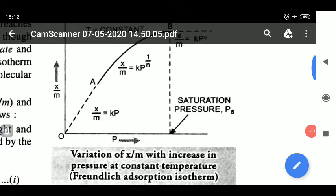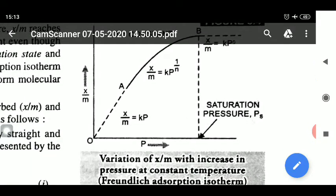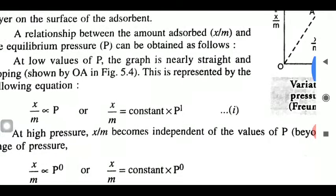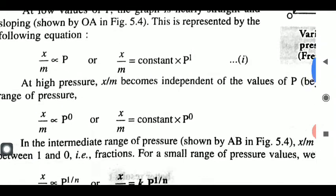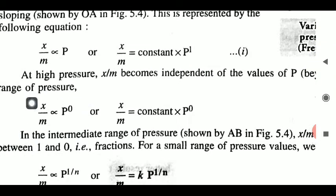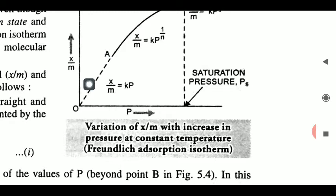इस पूरे phenomenon में x/m indicate हो रहा है। जब p की value बढ़ा रहे होगे, x/m बढ़ेगा — इसका मतलब x/m is directly proportional to pressure। So x/m = constant × p^(1/n)। Initially x/m = constant × p^1, meaning x/m is directly proportional to p. And at completion, x/m = k (constant), meaning x/m = k × p^0।